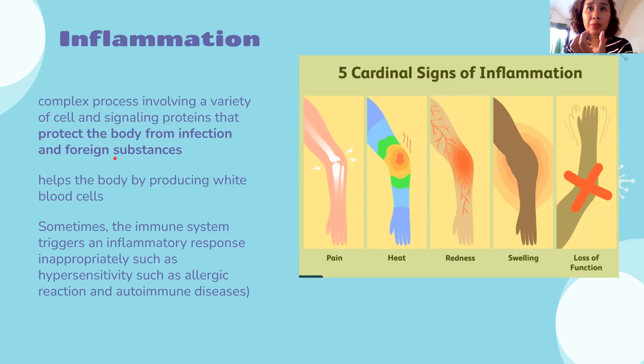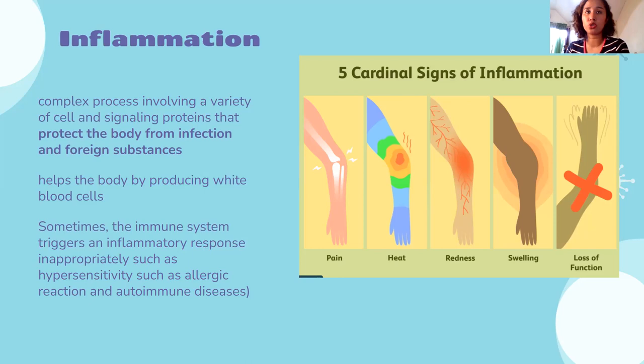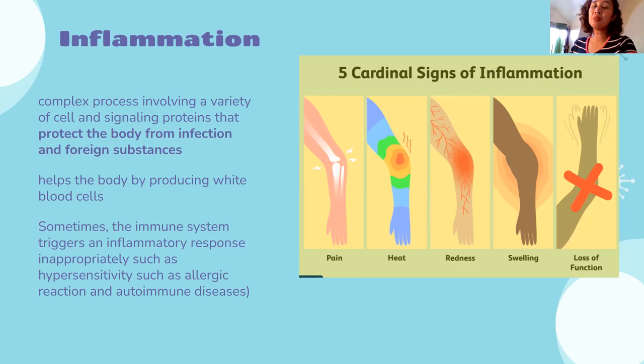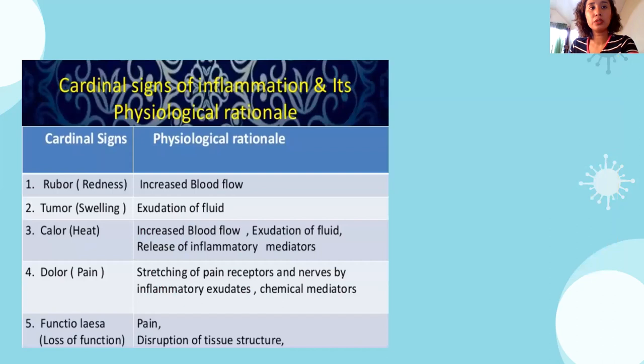If there is inflammation, the body is trying to fight off the infection. However, it has limits — this is innate or non-specific immune response. Sometimes the immune system triggers an inflammatory response inappropriately, resulting in hypersensitivity and allergic reactions. When the immune response becomes excessive, it becomes an allergy. That is why we need cells that suppress or regulate the immune system, or sometimes we take antihistamines or anti-inflammatory drugs because the body's reaction is excessive.